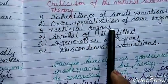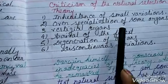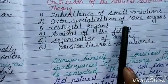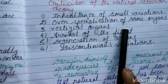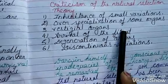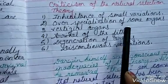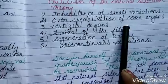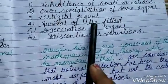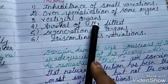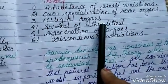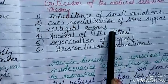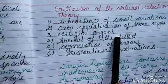Why are vestigial organs present in some animals when they have no function? According to natural selection theory, vestigial organs should not be present. Another criticism is the arrival of the fittest — the theory only explains the survival of the fittest, but is unable to explain the arrival of the fittest.